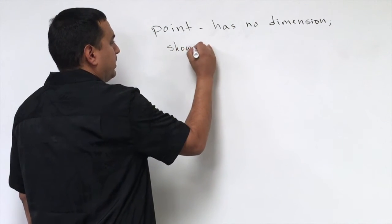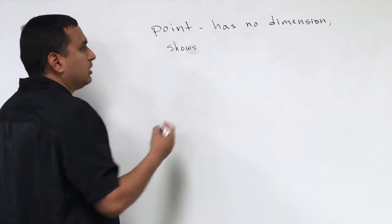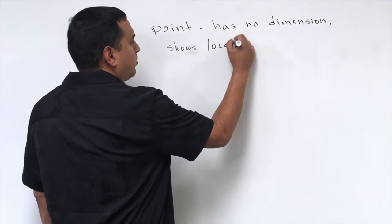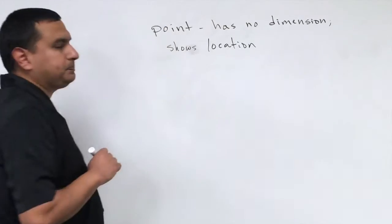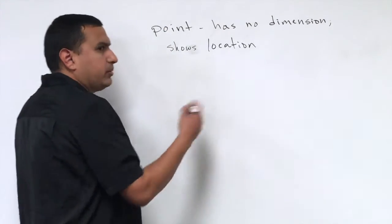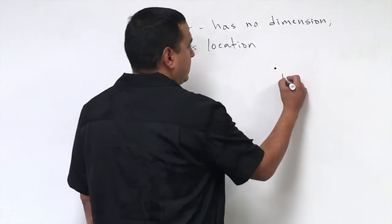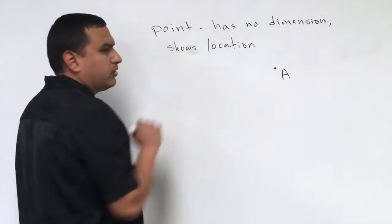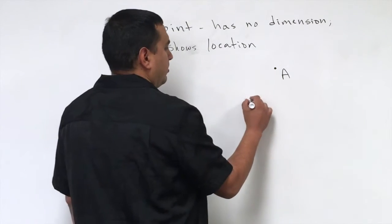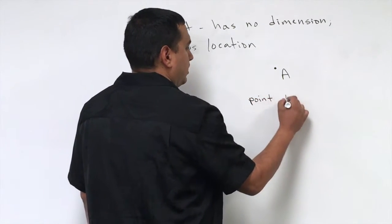This could be on a grid, it could be on a map somewhere, but it's just telling us where something is. Now the way we describe it or the way we draw it, we simply just put a point here and we name it with a capital letter. So this right here, that would be describing point A.